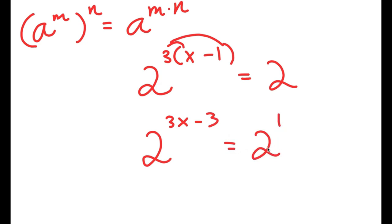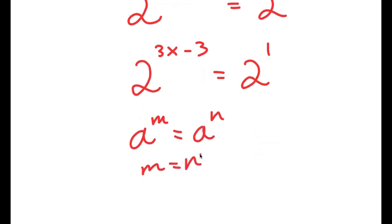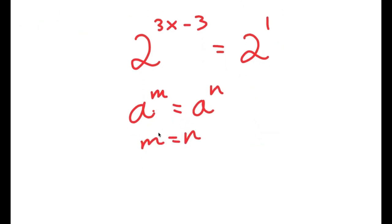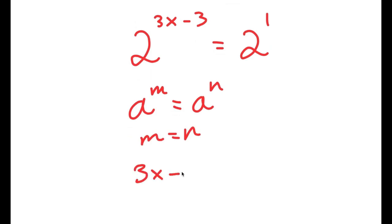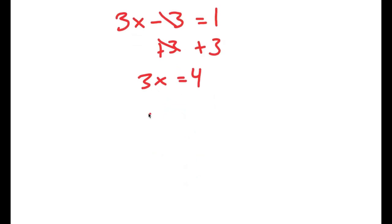Since 2 equals 2 to the power of 1, and using the rule that if a^m equals a^n then m equals n, I get 3x minus 3 equals 1. Adding 3 to both sides gives 3x equals 4, so x equals 4 over 3.